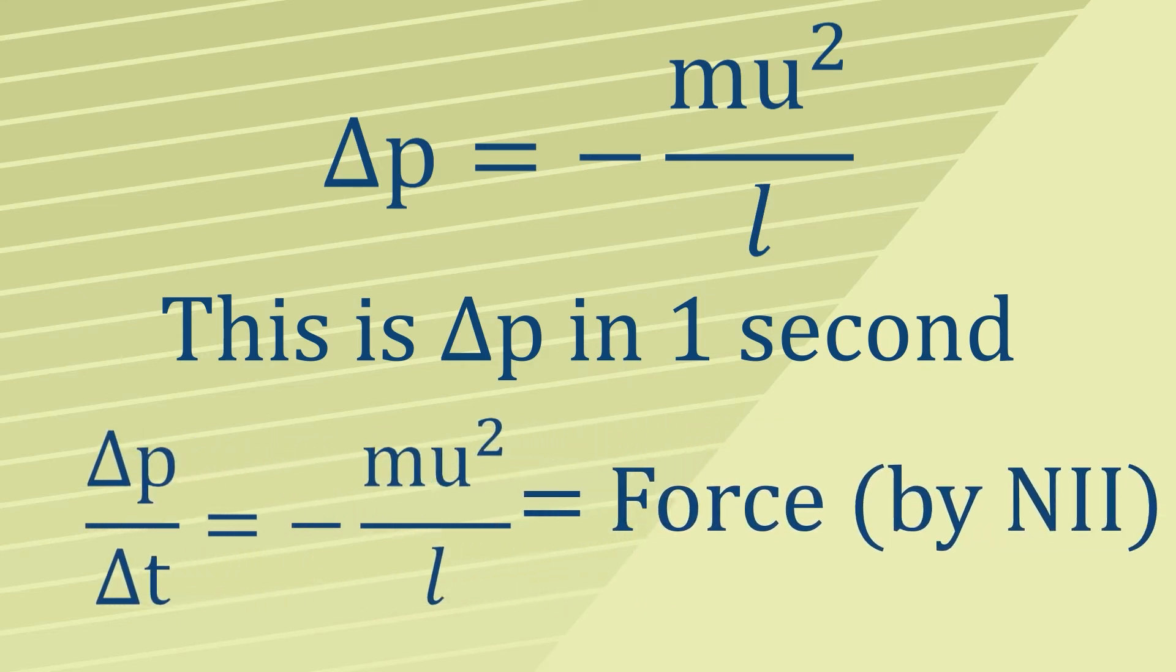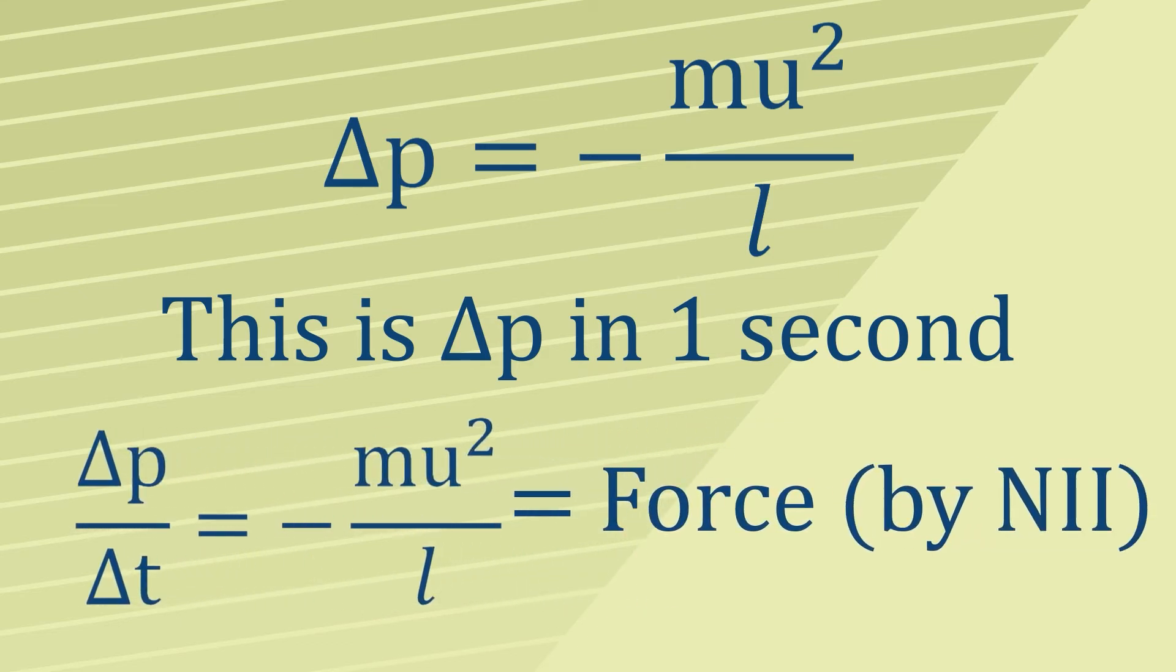Since delta T equals 1, we can further say that our formula for delta P, minus MU squared over L, is equal to the force. But what exactly is this force?